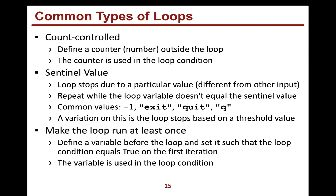The last type is making the loop run at least once. We define a variable before the loop and set it to any value that isn't our stop value. That way the loop condition is true on the first iteration, guaranteeing we enter the loop at least once. That variable is then used in the loop condition.